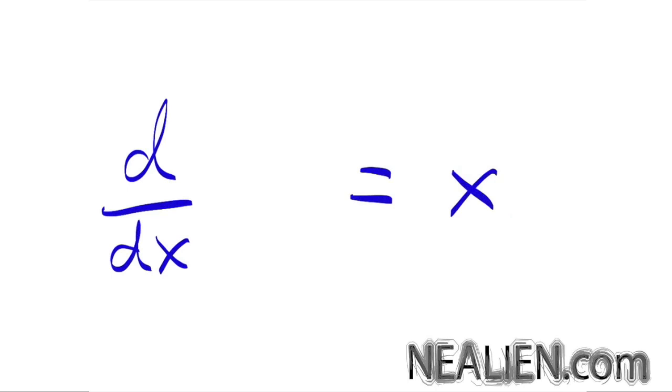So we want to get something that when we take the derivative of it we get x. Let's plug in x squared because that was pretty close to what we wanted. 2 minus 1 is 1 and we bring the 2 in front, we have x to the 1. That's really close, it's really just off by a factor of 2.